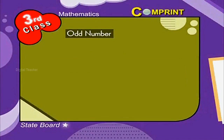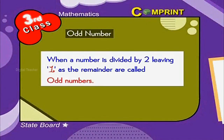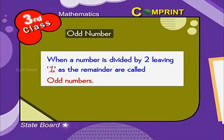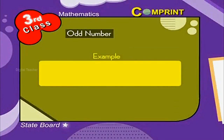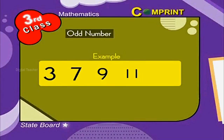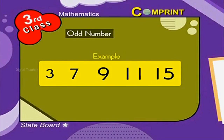Odd Numbers: When a number is divided by 2, leaving 1 as the remainder, they are called odd numbers. For example, 3, 7, 9, 11, 15, and so on.